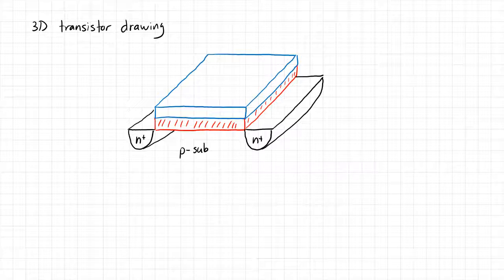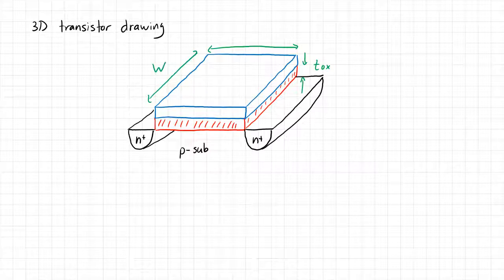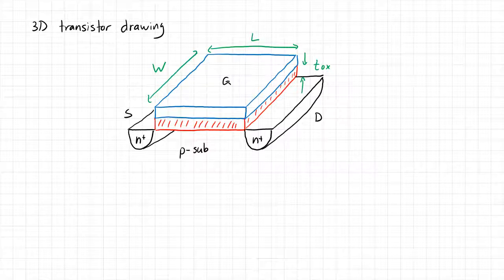One thing I like to ask is: which dimension is the width and which is the length of the transistor? It turns out the width of the transistor is the dimension going across, and the length is the dimension from drain to source. When charge has to go from the drain to the source, it traverses a length L and gets to do so in multiple parallel paths proportional to W.